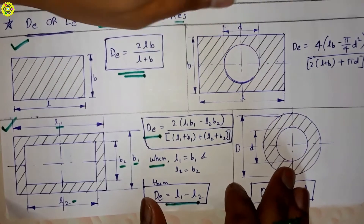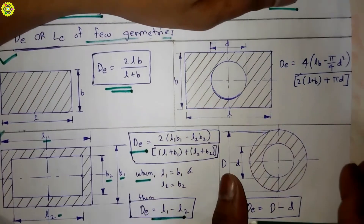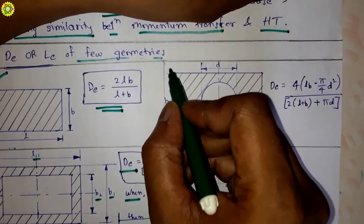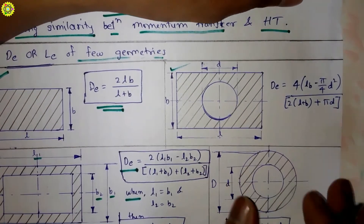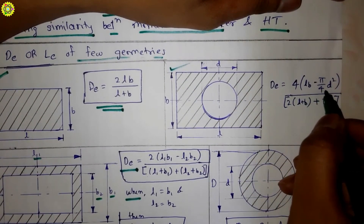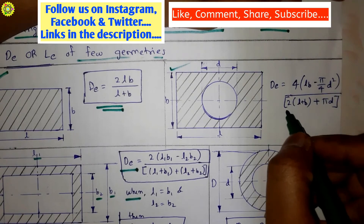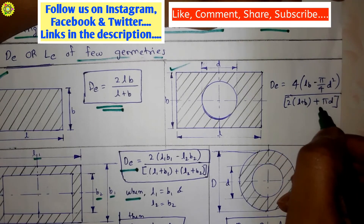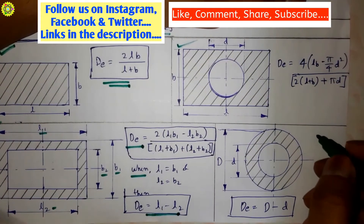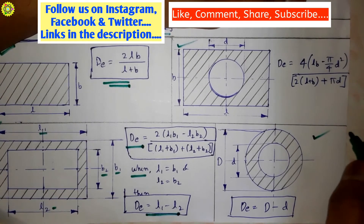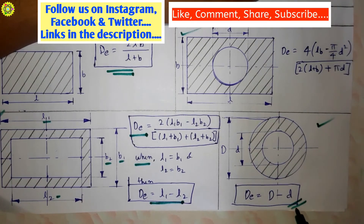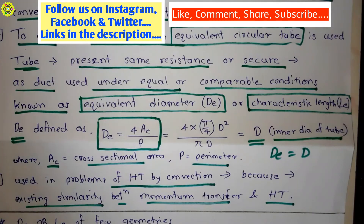For the third geometry, which is a rectangular duct with an internal circular rod, the formula is: de = 4(lb − π/4 · d²) / [2(l + b) + πd]. For the fourth geometry, which is a circular annulus, the formula is: de = D − d, where D is the outer diameter and d is the inner diameter.